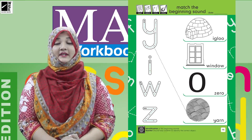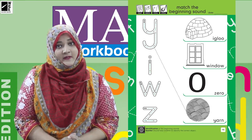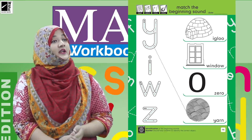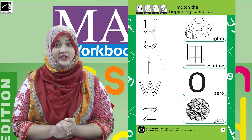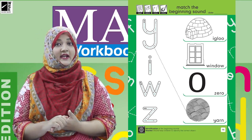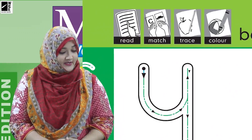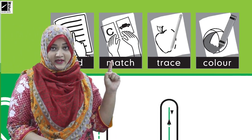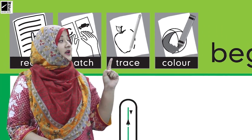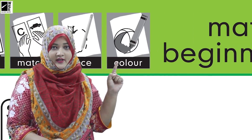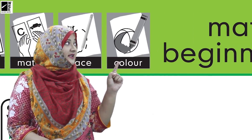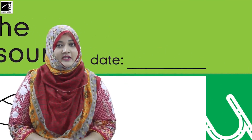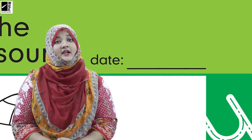Open page number 98. So let's open our books at page 98. Now what we have to do — first we see the icons, then start work. First icon is read, match, trace, color, and after that write the date on the date section.